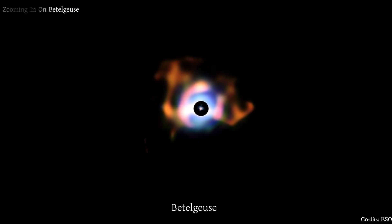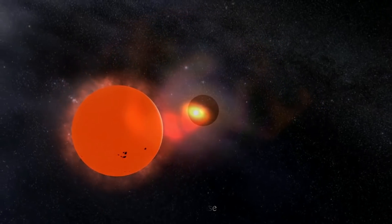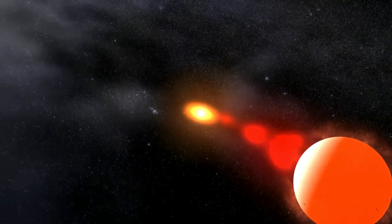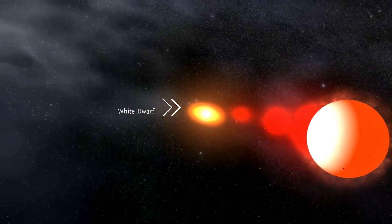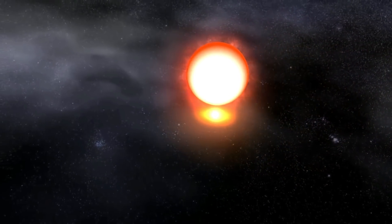There is another type of supernova. They can occur when two stars orbit one another and at least one of the stars is an Earth-sized white dwarf. If the white dwarf collides with another star or pulls too much matter from its nearby star, the white dwarf can explode.